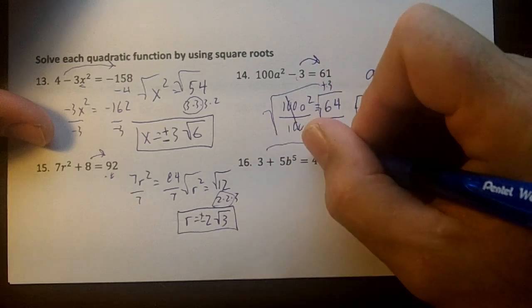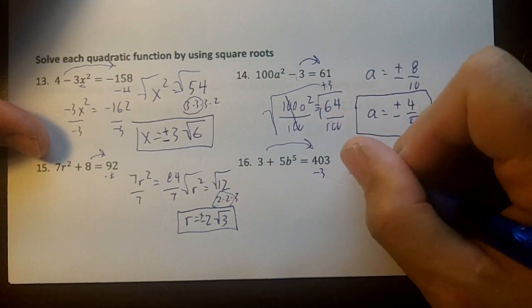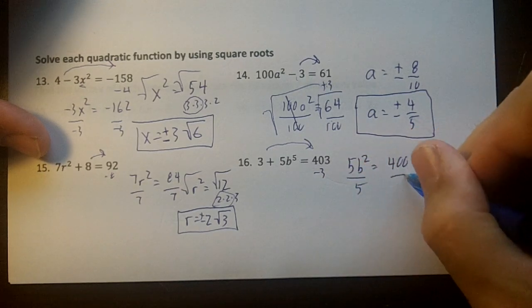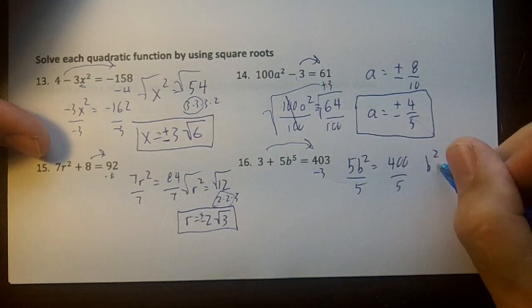Over here, we're going to move over the 3, subtract 3. I get 5b squared equals 400. Divide by 5, divide by 5, I get b squared equals 80.